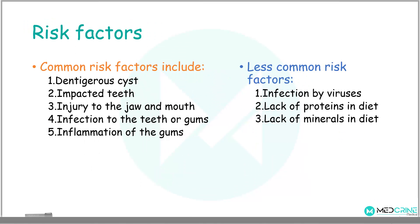The common risk factors for the development of ameloblastoma are: a dentigerous cyst, impacted teeth, injury to the jaw and mouth, infection of the teeth or gums, and gum inflammation. Some less common risk factors associated with ameloblastoma development include infection by viruses, lack of proteins in the diet, and lack of minerals in the diet.